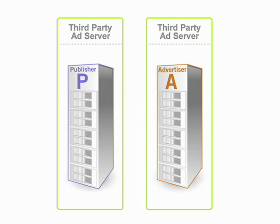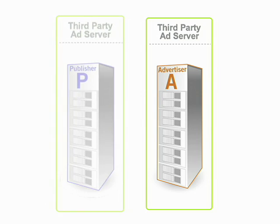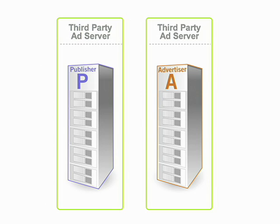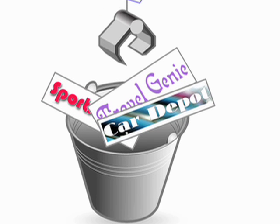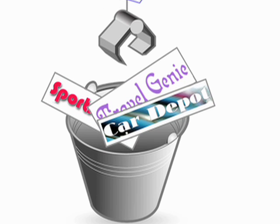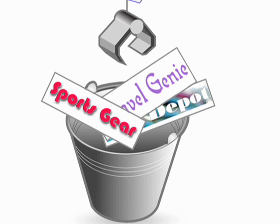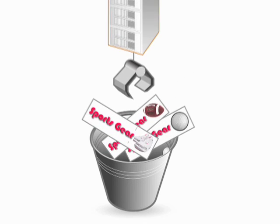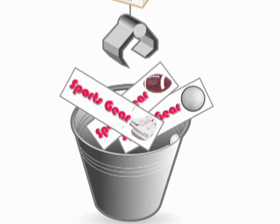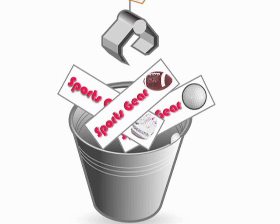Third-party ad servers come in two flavors: publisher ad servers and advertiser ad servers. The publisher's ad server's job is to determine which advertiser's ads to show. The advertiser's ad server's job is to decide which actual ad to show from its ad inventory.